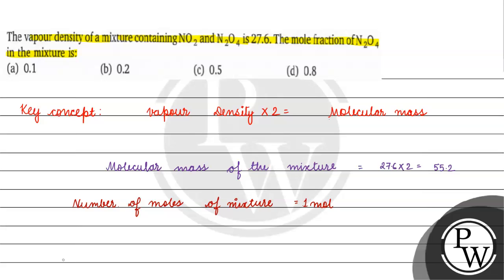Number of moles of NO2, let's say x mole. Number of moles of N2O4 will be equals to 1 minus x moles.